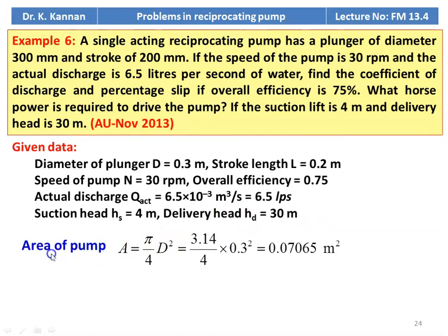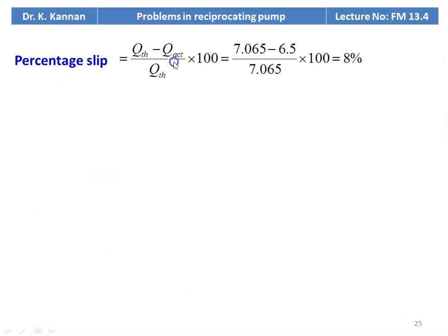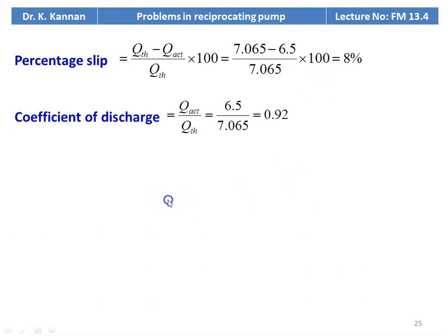The area of the plunger A = π/4 × D² = 3.14/4 × 0.3² = 0.07065 meter square. The theoretical discharge Q_theoretical = A × L × N/60 = 0.07065 × 0.2 × 30/60 = 7.065 × 10⁻³ meter cube per second or 7.065 liters per second. The percentage of slip = (Q_theoretical − Q_actual) / Q_theoretical × 100 = (7.065 − 6.5) / 7.065 × 100 = 8%. Coefficient of discharge = Q_actual / Q_theoretical = 6.5 / 7.065 = 0.92.